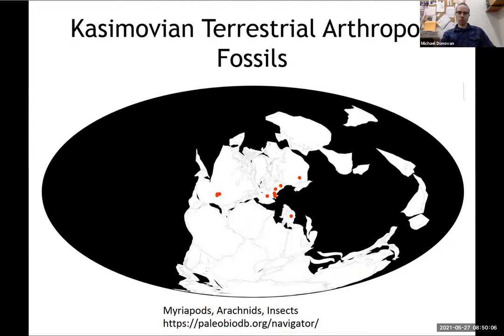Here is a map of the occurrences of terrestrial arthropods during the Casimovian. You can see they are mostly dispersed across the equatorial regions in North America, the United States, as well as mostly Western Europe, and some occurrences in Northern Africa. This map includes occurrences of myriapods, arachnids, and insects.